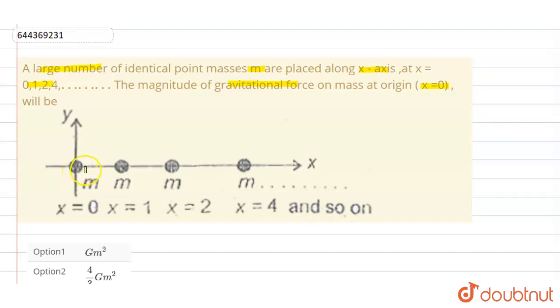So here is the figure of the problem. This is the point mass m which is located at the origin, and after that at x equals 1, another point mass which has the same mass, that is small m, and so on at x equals 2 and x equals 4 and so on further.